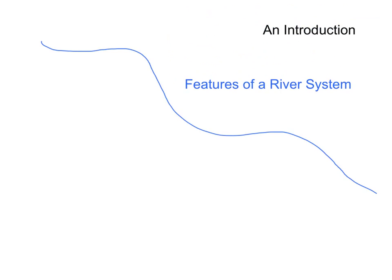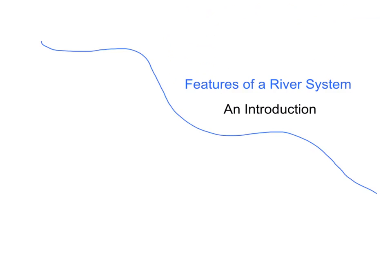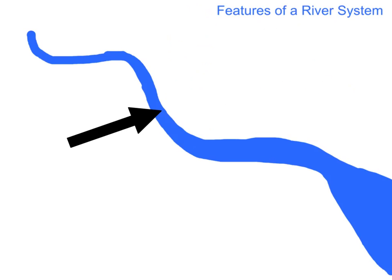The features of a river system — an introduction. The wet part of a river is called the river channel. This is the part that holds the water.